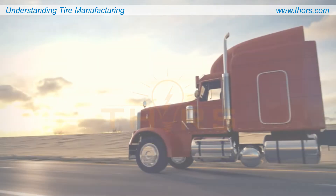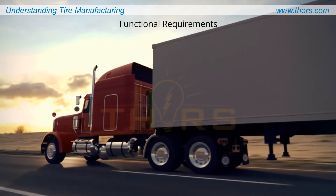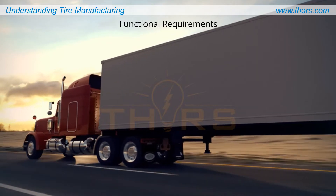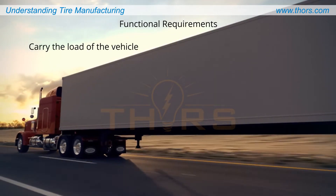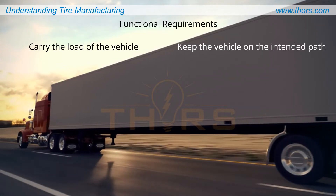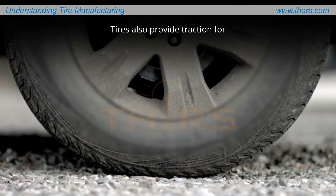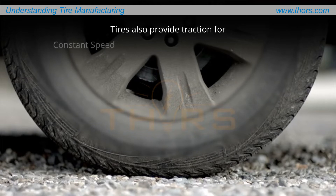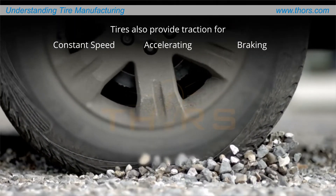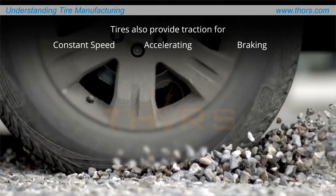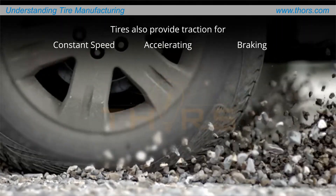When in operation, tires have several functional requirements. A tire's primary function is to carry the load of the vehicle and keep the vehicle on the intended path. Tires also provide traction for constant speed, accelerating, and braking in different weather conditions, as well as different ground surfaces and terrain.